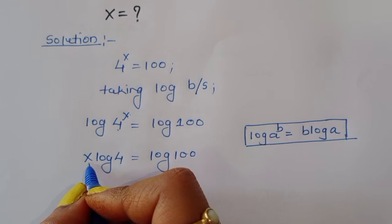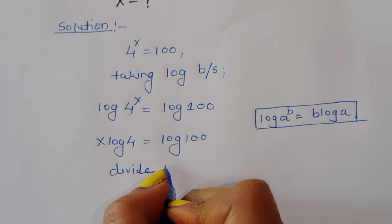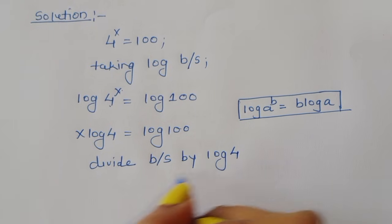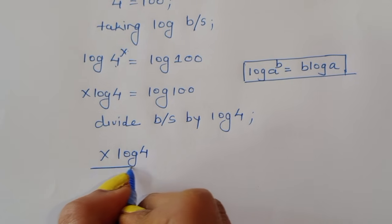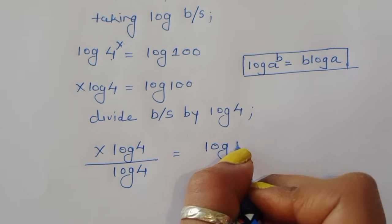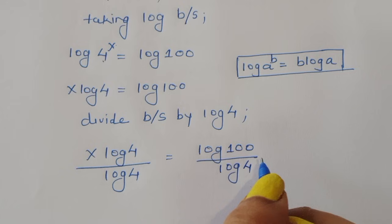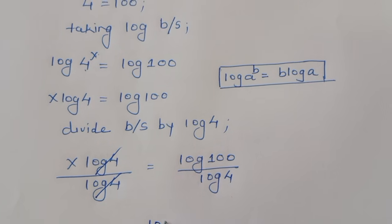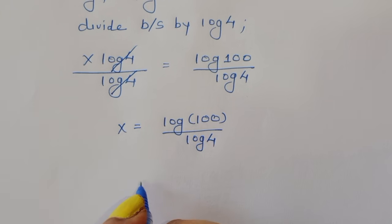Now we have to find the value of x, so we divide both sides by log of 4. Then x times log of 4 divided by log of 4 is equal to log of 100 divided by log of 4. Log of 4 cancels, so x is equal to log of 100 divided by log of 4.